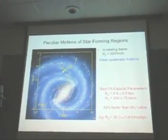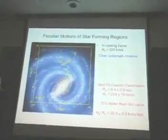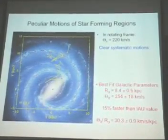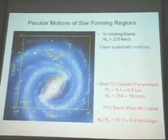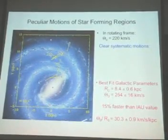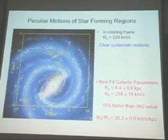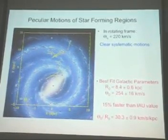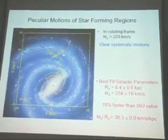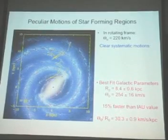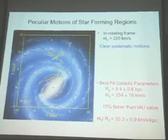These are the peculiar or non-circular vectors for all of these objects that we've measured. So you take out circular motions. This is what's left over. You can see all those arrows point roughly to the left. The galaxy spins clockwise when viewed from the North Galactic Pole, and all these guys are going counterclockwise. Here are the ones in the Perseus arm that have some of these big peculiar motions.